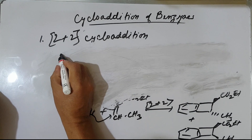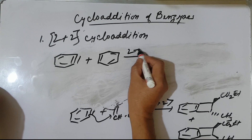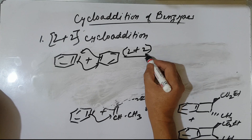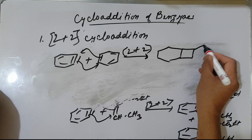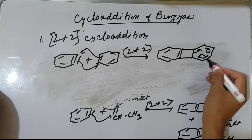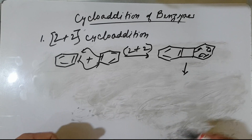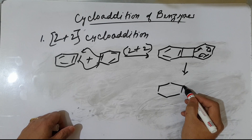Benzynes react with benzene in a 2+2 cycloaddition. A 4-membered fused ring forms. This 4-membered ring may undergo ring expansion. The result is a 6-membered ring fused with an 8-membered ring. So ring expansion takes place: 6-membered fused with 8-membered.